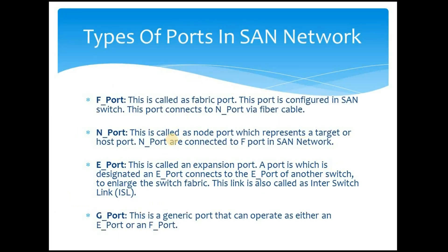Next to the Fiber Channel ports we have power supply connectors. There are four basic types of ports in a SAN network. The first is the F port, also called the fabric port. This port is configured in the SAN switch and connects to an N port. The N port, also called the node port, represents a target or host port — the target being the port on a storage frame, and the host port being the port of an HBA attached to a server.